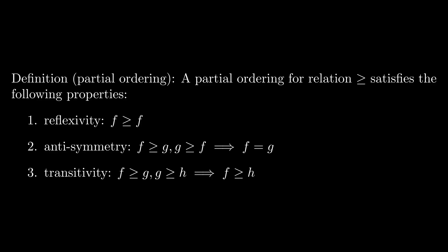The first is reflexivity, which means that any element f relates to itself. The second is antisymmetry, which means that if f relates to g and g relates to f, then f and g are equivalent.